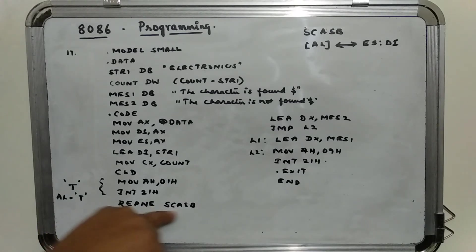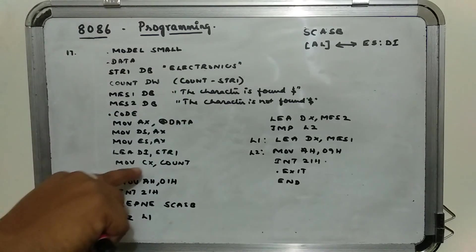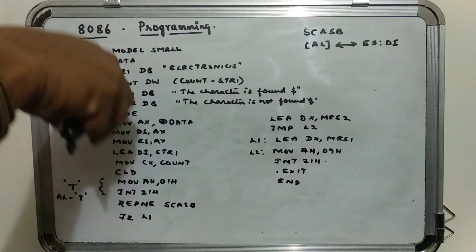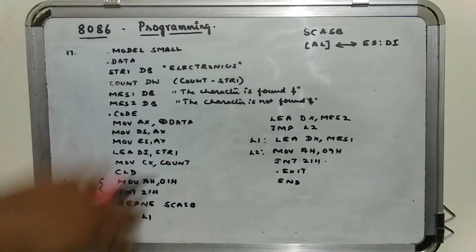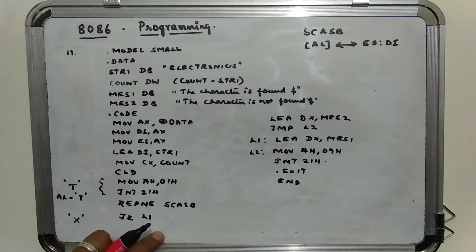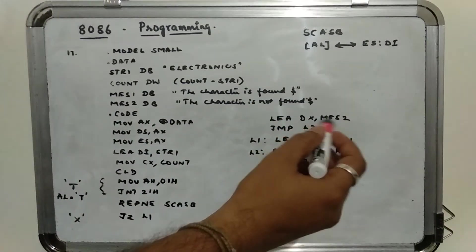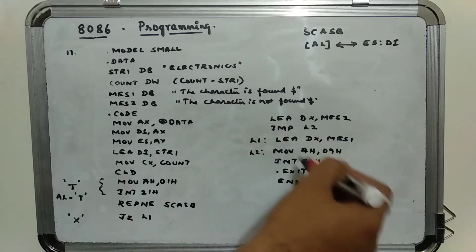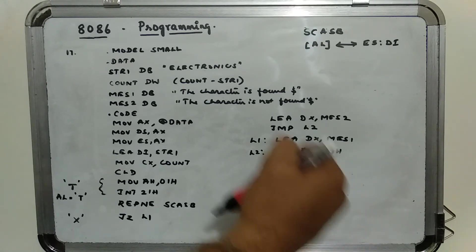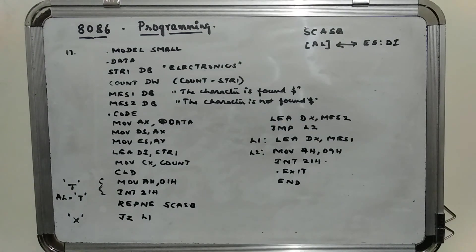After the scan completes — when CX becomes 0 meaning 11 comparisons done with no match — the jump if zero does not trigger. So the next instruction executes: LEA DX, message 2, stating 'character is not found'. Then jump to L2 to avoid printing message 1. At L2, move AH 09H, INT 21H displays the 'not found' message. This is how scanning of a character taken from the keyboard works: you declare a string, take input from the keyboard, compare them, and display the appropriate message on the console.